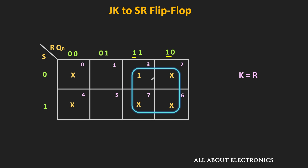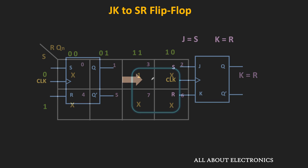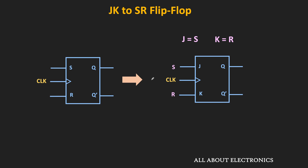By solving the two K-maps, we got the expressions J = S and K = R. That means simply by connecting the S input to J and the R input to K, we can convert the JK flip-flop into the SR flip-flop.